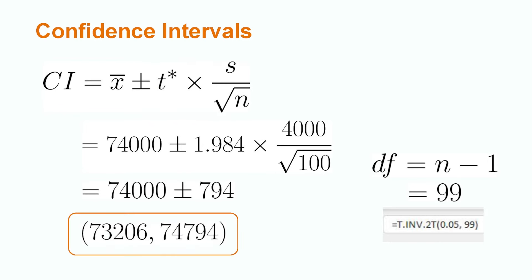This gives us a confidence interval of 73,206 to 74,794. This means that we could be 95% confident that the true mean salary for engineers in California is between $73,206 and $74,794.